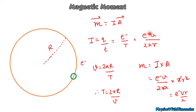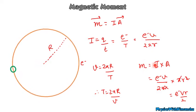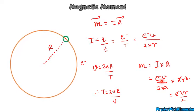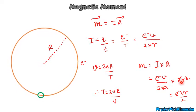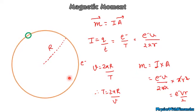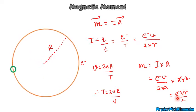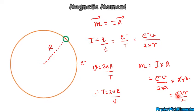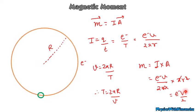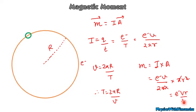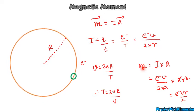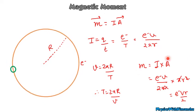Where e is the charge of electron. Magnetic moment is current times area, so m = (ev/2πr) × πr². This gives m = evr/2, where e is electron charge, v is velocity, and r is radius. This is the magnetic moment of revolving electron.